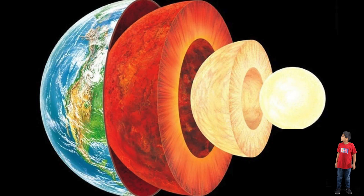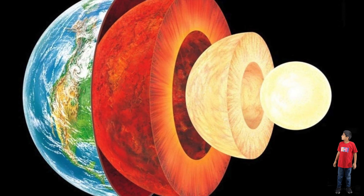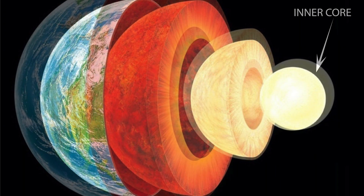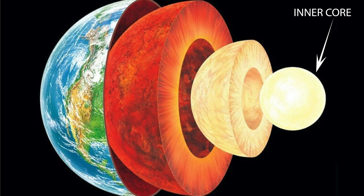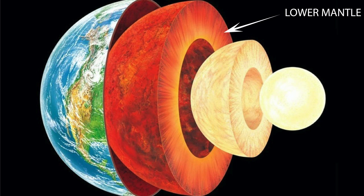If we separate the layers, this is what we'll get. The center, or the innermost layer — the fireball that you see — is known as the core, or inner core. The next one is known as the outer core. The one in orange is known as the lower mantle.